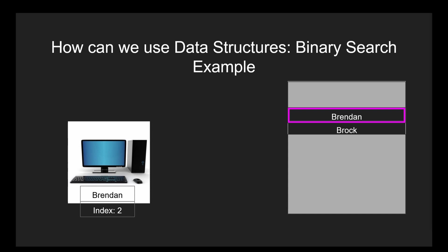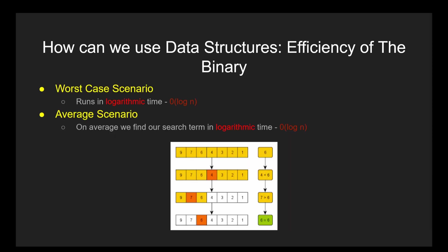In binary search, eventually the index we compare to our search term will be the same, and once it is, we can return the index and move on. Now if we don't find it — which happens after we have eliminated the entirety of the list without finding our search term — the algorithm will simply return a null value to let you know that the item you are searching for cannot be found on the list. The binary search is way faster and more efficient than the linear search, since we are drastically cutting down the amount of elements we have to look at, making the program run faster. Almost 99.9% of cases in which your list is sorted, the binary search is going to return a result faster than the linear search.